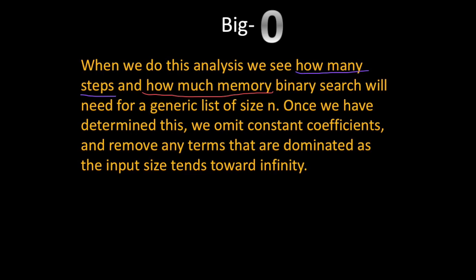So let's look at an example. Let's say that we determine an algorithm uses 4n squared plus n steps. So we first remove constant coefficients. 4 is a constant coefficient.